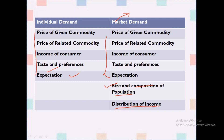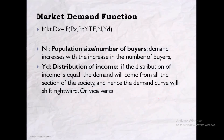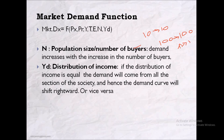Now there are two additional factors: size and composition of the population, and distribution of income. Regarding population size and number of buyers — if your population increases, demand will also increase. For example, if there were 10 consumers each demanding one unit, demand was 10. If consumers increase from 10 to 100, demand will also increase. So there is a direct relation: as the number of consumers increases, demand increases.